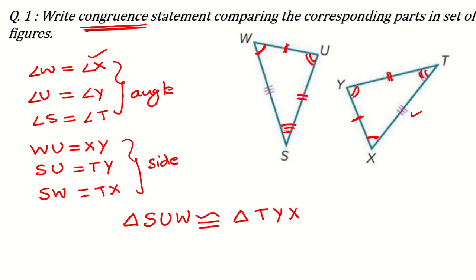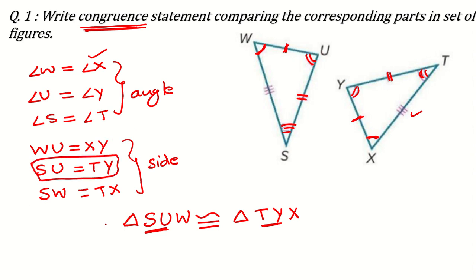Now let me show you how to verify this. SU is the first side here, and TY is the first side there — they are equal. Second side is UW, and the second side there is YX — UW and YX are equal, as we already wrote. You can verify it here.